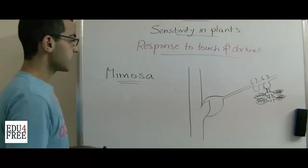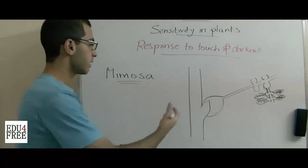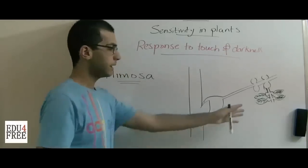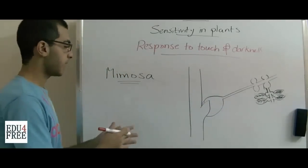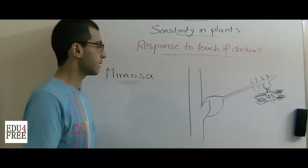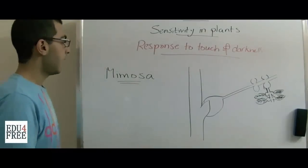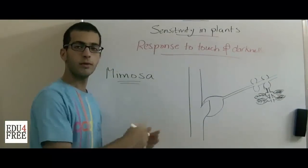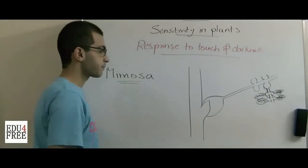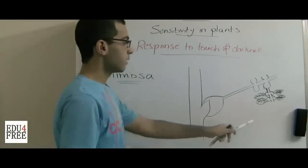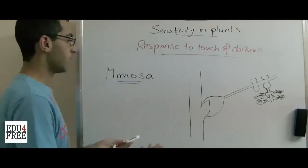When somebody touches this plant or when night comes, all the leaflets and the leaves of this plant droop as they wilt. And when the stimulus is removed or when daylight comes, the leaves return to their normal position again.